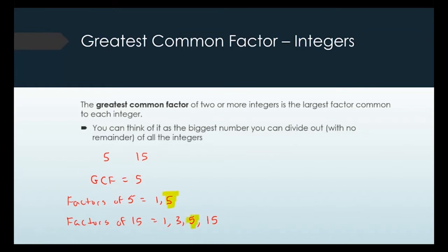The biggest one in common is 5. You can find the GCF by listing all the factors and then looking for the largest shared one.